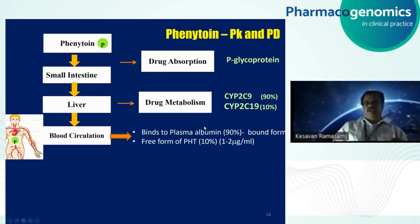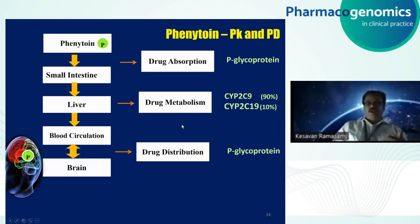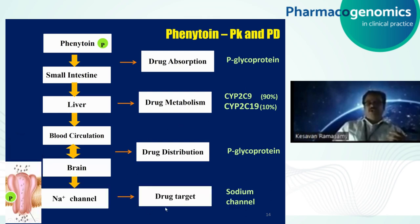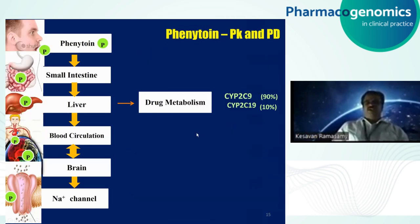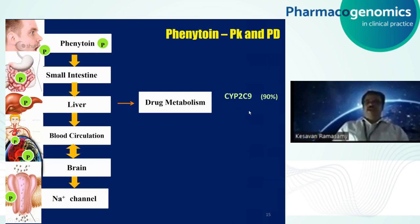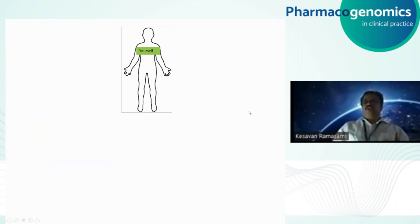Once in blood circulation, phenytoin binds to plasma albumin, and the free drug is able to cross the brain and bind to the sodium channel, where it produces its target action. Most research on drug toxicity has focused on these drug-metabolizing enzymes, and in particular on CYP2C9, because it contributes to 90% of metabolism. Researchers started examining whether variants are present in these 2C9 enzymes.